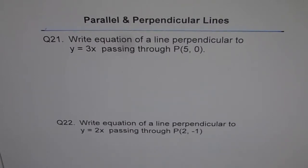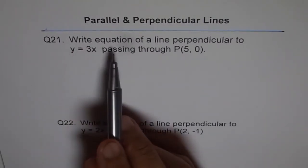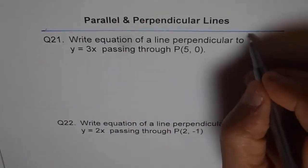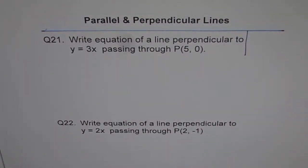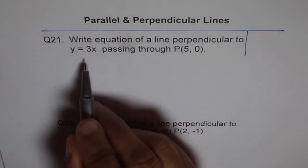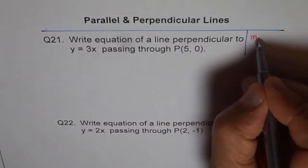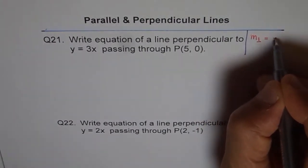Okay, now here is how I am going to solve question 21. Write equation of line perpendicular to y equals 3x. When we say perpendicular to, then what do we mean? We mean that the slope of the line will be negative reciprocal of given line slope. So we know m perpendicular is equals to minus 1 over m. That is first thing.